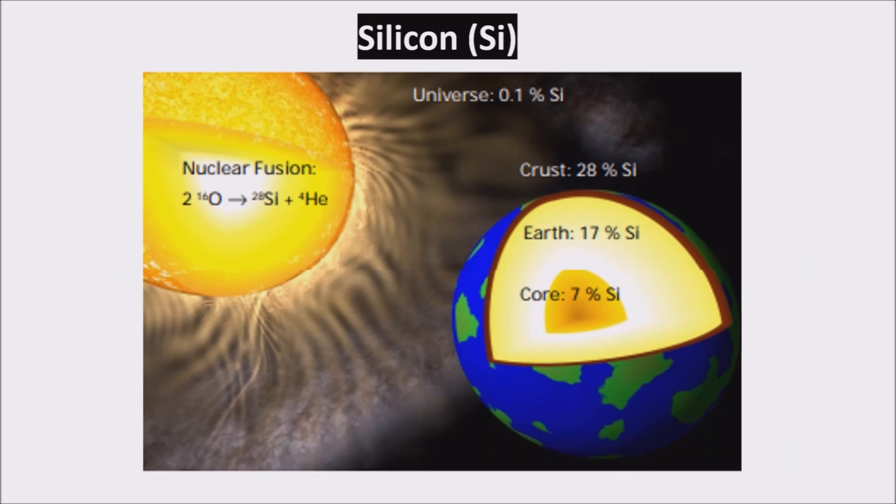The entire planet Earth contains approximately 17% silicon, the third most abundant element after iron and oxygen. But the natural occurrence of pure elemental silicon is irrelevant in terms of volume.